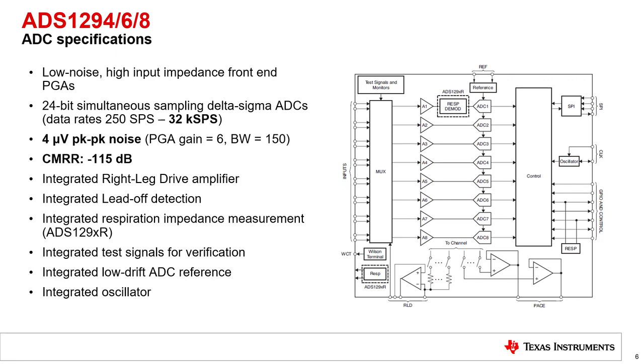The higher-channel count versions, ADS1294, 1296, and 1298, have even more integrated features and even better performance. For example, the integrated ADC can go up to 32K SPS sampling rate and supports lower noise and higher common mode rejection ratio. Apart from the features which are integrated into lower-channel devices, these higher-channel devices have integrated WCT amplifier and integrated analog pacemaker output.